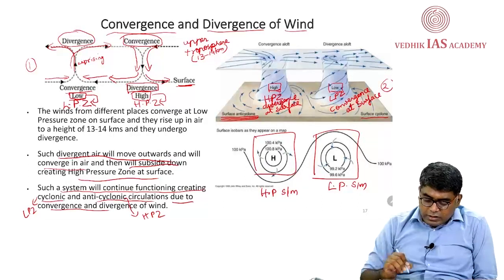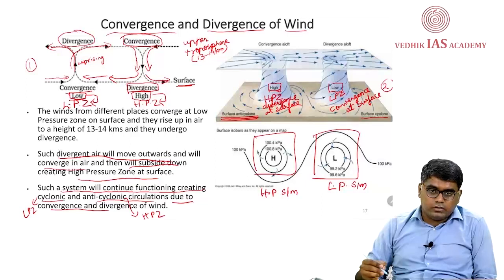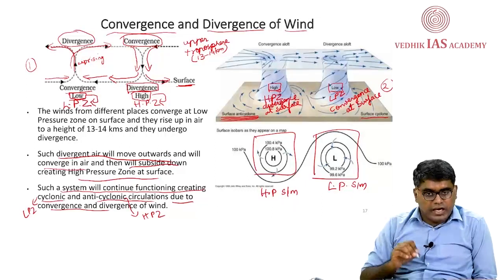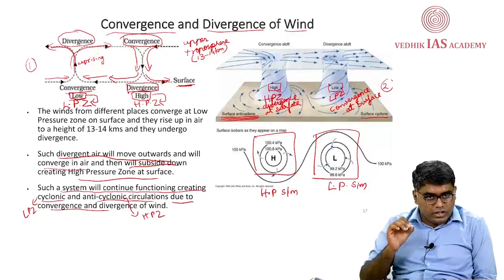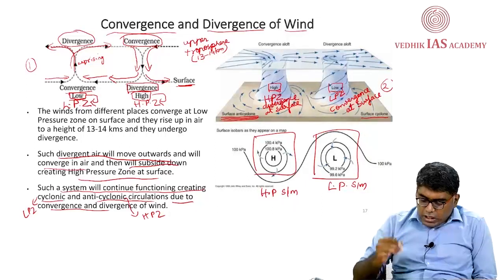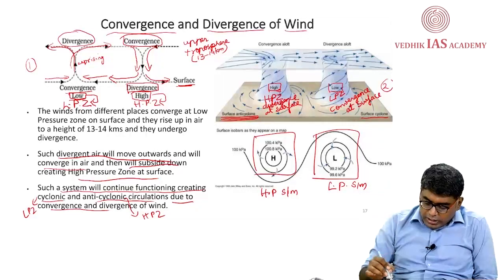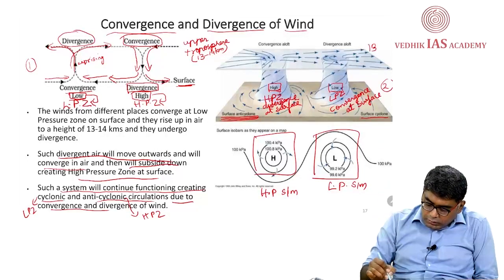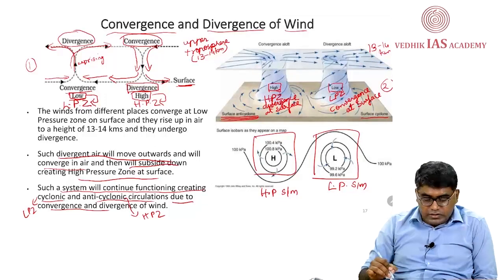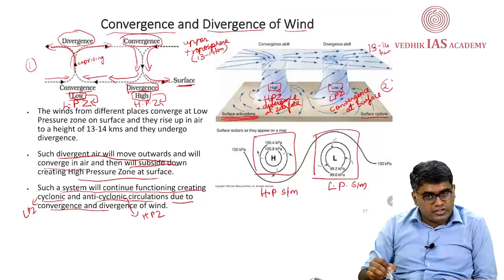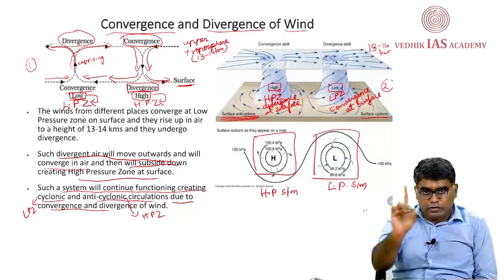What does it form? A surface anticyclone. So both things at the surface have already been discussed. Moving up in the troposphere at the height of 13 to 14 kilometers — what do you see? Wherever it is a low pressure zone or convergence at the surface, the wind blows up in cyclonic formation.